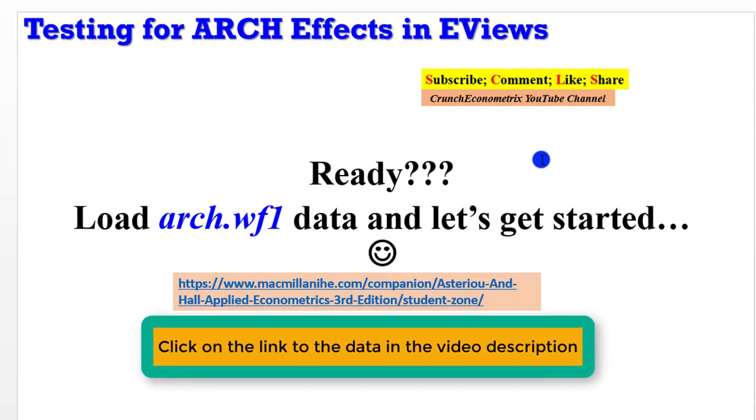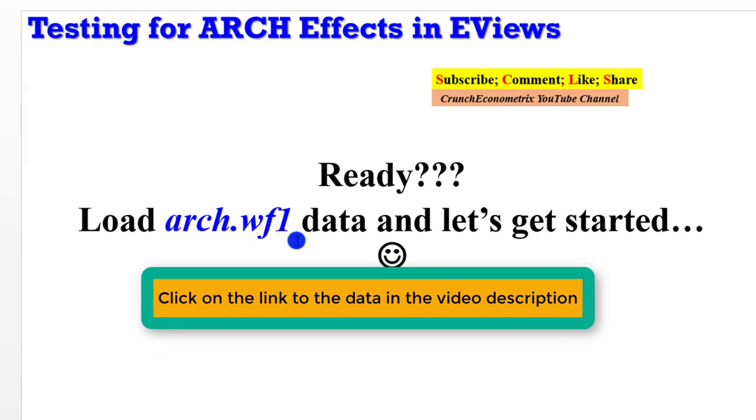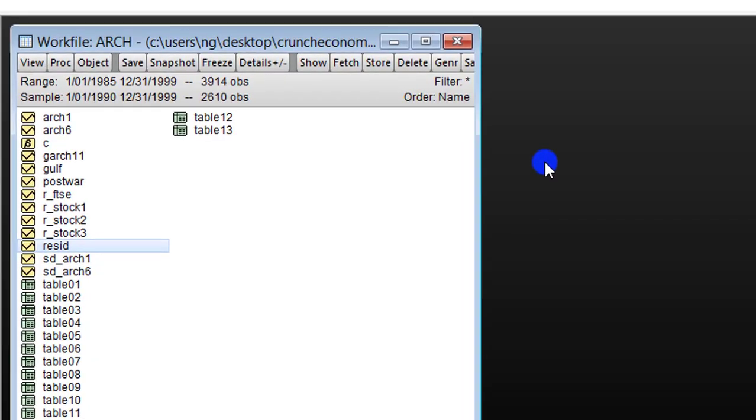I prefer you use your own data and just follow my procedure. But if you want to use the data I'm using, please click on this link. It is a link to the Astero and Hall dataset. Click on it and look for arch.wf1 data.